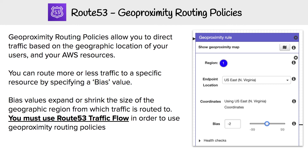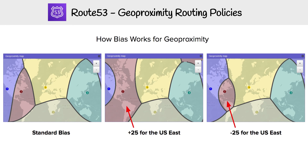We're going to look at geo proximity routing policy, which is probably the most complex routing policy. It's a bit confusing because it sounds a lot like geolocation, but it's not. You cannot create this using record sets — you have to use traffic flow, because it is a lot more complicated and you need to visually see what you're doing. So it's going to be crystal clear as we go through and look at what it does.